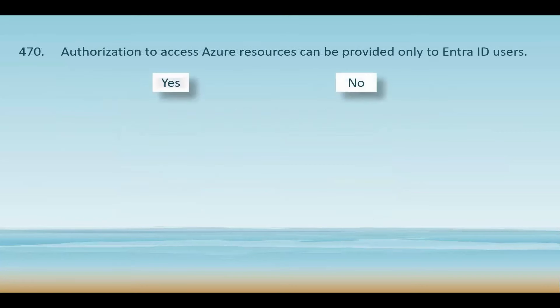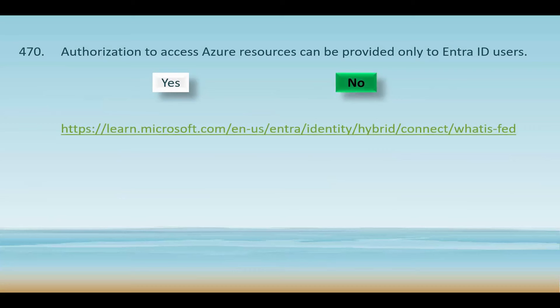Authorization to access Azure resources can be provided only to Entra ID users — you need to tell whether this statement is right or wrong. This is an incorrect statement. Authorization to access Azure resources can be provided by other identity providers by using federation. A commonly used example is federating your on-premise Active Directory environment with Entra ID and using this federation for authentication and authorization.